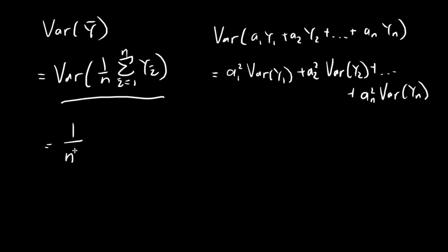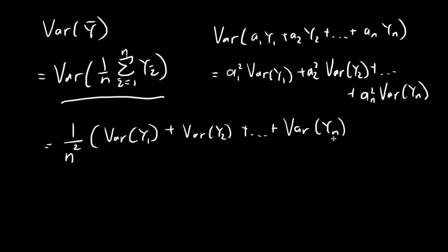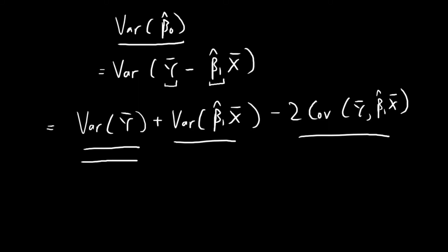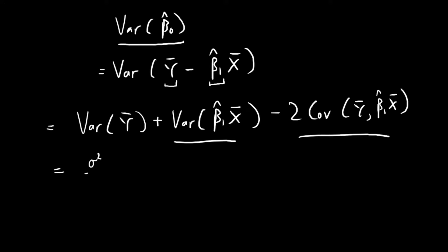So in the end, you have (1/n²) times [Var(y₁) + Var(y₂) + ... + Var(yₙ)]. The variance of each y term is equal to σ². So all these terms are σ², and we have a total of n such terms. So the expression in the bracket is just n times σ², and the whole thing equals σ²/n. So we've found this first term: Var(ȳ) = σ²/n.